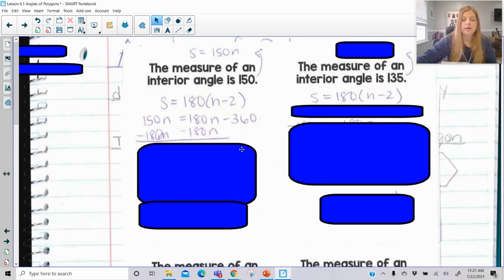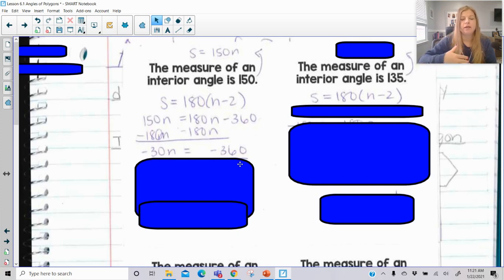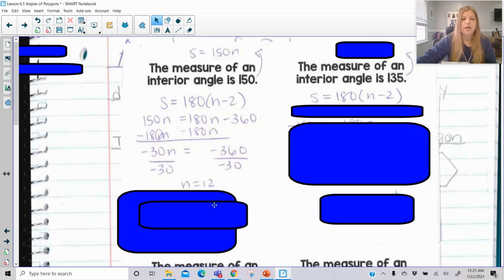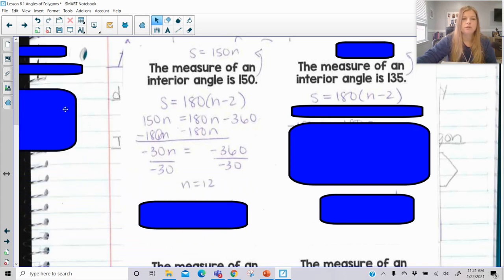So 150n, so 150 degrees times the number of angles should be equal to 180n minus 360 after I go ahead and I distribute. So what we're doing here is we're not plugging in the number of sides, we're actually solving for the number of sides. We want to know how many sides of a polygon do I need so each interior angle is 150. We're going to subtract 180n on both sides. What you're going to notice here is you're always going to get a negative value, negative 30n is equal to that negative 360. But we know we can't have a negative answer, which we're not going to have. We're going to divide both sides by negative 30 and we're going to end up getting n equals 12.